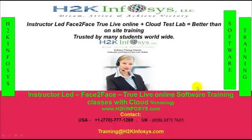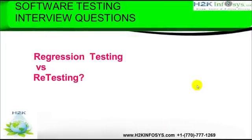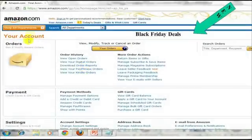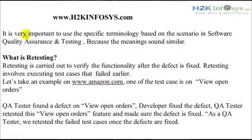What is regression testing versus retesting? Let's take an example on Amazon.com. Here we have multiple features like view open orders, digital orders, reports, and more. It is very important to use the specific terminology based on the scenario in software QA testing, because the meanings sound similar.